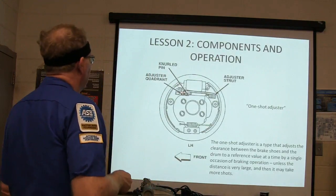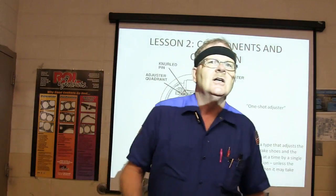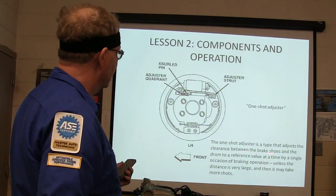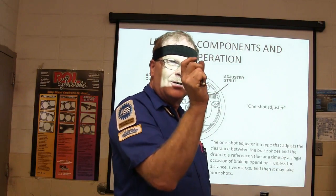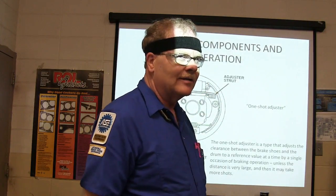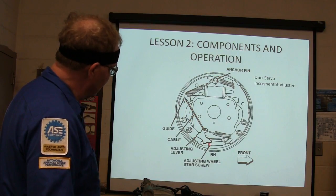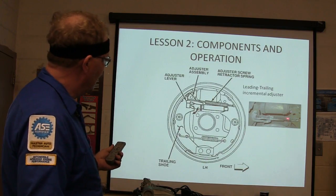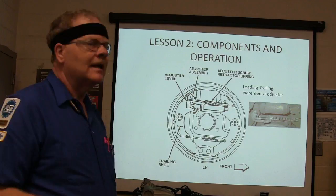Neural pin — some have a little adjuster up top. If you see the adjuster under the wheel cylinder, that's going to be leading/trailing. Remember that: adjuster under the wheel cylinder equals leading/trailing brakes. There's also a one-shot adjuster that adjusts clearance incrementally. The duo servo incremental adjuster — every time you operate the brakes and they move far enough, it goes click-click-click and adjusts out. The adjuster assembly is right under the wheel cylinder. What kind are these? Leading/trailing — that's right.